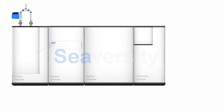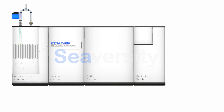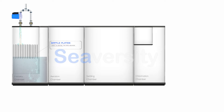The design of the primary chamber, aided by baffle plates, encourages the settling of heavier solids at the bottom and a breakdown of solid waste. This separation is crucial for the efficiency of the entire treatment process, as it prevents the overloading of the aeration chamber with solid waste. Pre-treated sewage, now with reduced solid content, is then transferred to the aeration chamber.